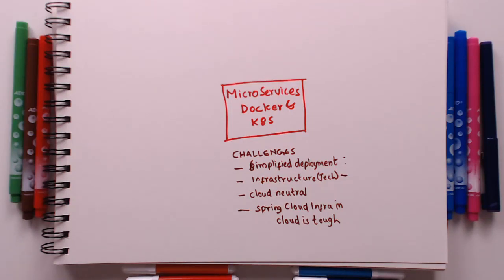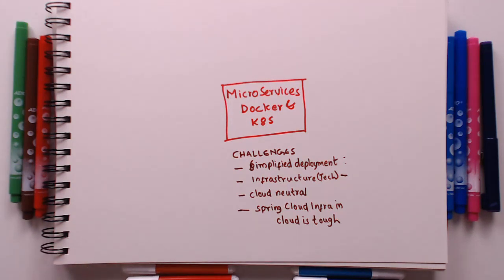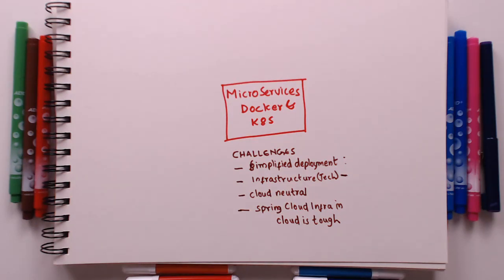Another important challenge in microservices architecture is to stay cloud neutral. If you use a specific feature provided by AWS, GCP, or Azure then you are tied to that specific cloud. You want to remain as cloud neutral as possible, and you don't want to deploy Spring Cloud-specific infrastructure components into your cloud. So now let's look at some of the important solutions in this area.